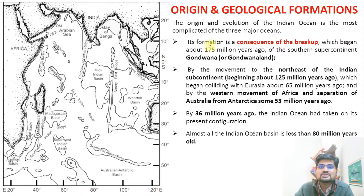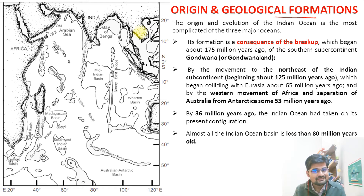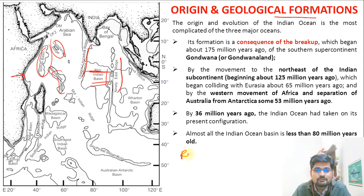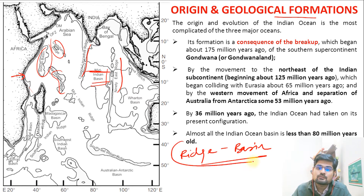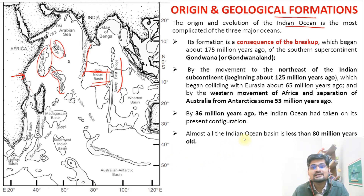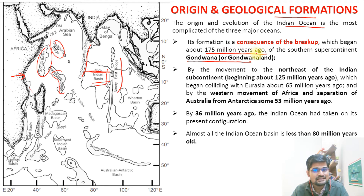The Indian Ocean is full of ridges and valleys — a mountains and valley structure with lots of mid-oceanic ridges that separate the ocean into several small basins. The origin and evolution of the Indian Ocean is the most complicated among all oceans. It is a consequence of the Gondwana separation around 175 million years ago — the breakup of Pangaea — and by the northeastward movement of the Indian subcontinent beginning about 125 million years ago.